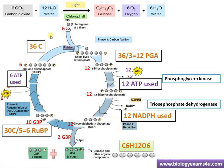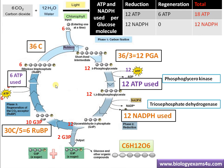This completes the Calvin cycle — we return to the starting substrate of 6 molecules of RuBP. Regarding total energy used: during the reduction stage, 12 ATP is utilized; during the regeneration step, 6 ATP is utilized — giving a total of 18 ATP utilized per glucose molecule. Regarding NADPH: during the reduction stage, 12 NADPH is used — total 12 NADPH is used per glucose molecule. The Calvin cycle is simply the conversion of CO₂ into glucose using the energy synthesized in the light-dependent reaction — that is ATP and NADPH.